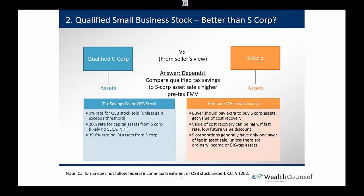You really have to go through that analysis to answer the choice-of-entity question. Where I normally come out is going with the pass-through whenever I can, because I don't know how long QSBS is going to be around — Congress keeps monkeying with it. We already lost it for California purposes, so it's not one I want to hang my hat on. I'd rather take my chances with pass-through taxation than rely on QSBS.